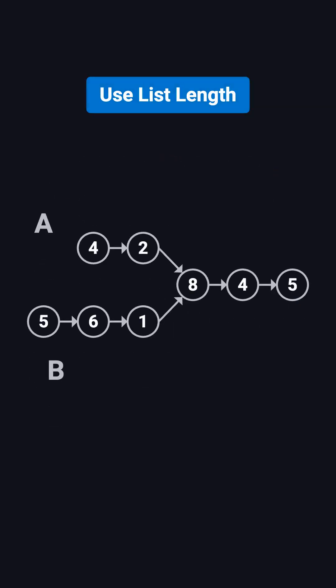Another approach is to use the lengths of the lists. First, we traverse both lists to get their lengths, say lenA and lenB. Then we compute the difference x. We let the pointer on the longer list move ahead by x steps first.